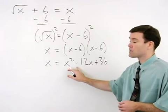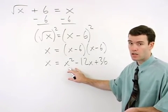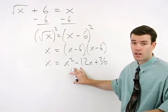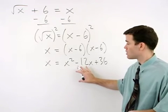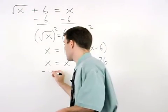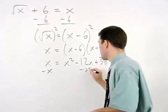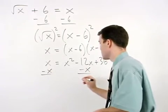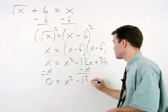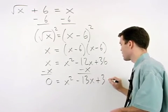Remember that when an equation has a squared term in it, we must set the equation equal to 0, then factor. So our next step is to move the x to the right side by subtracting x from both sides of the equation to get 0 equals x squared minus 13x plus 36.